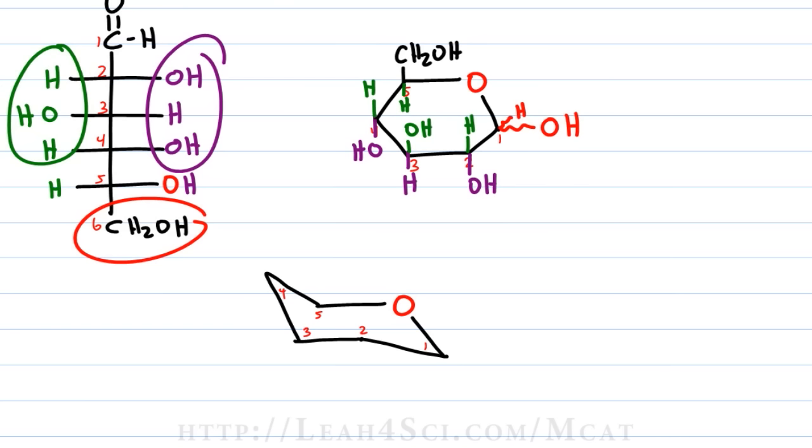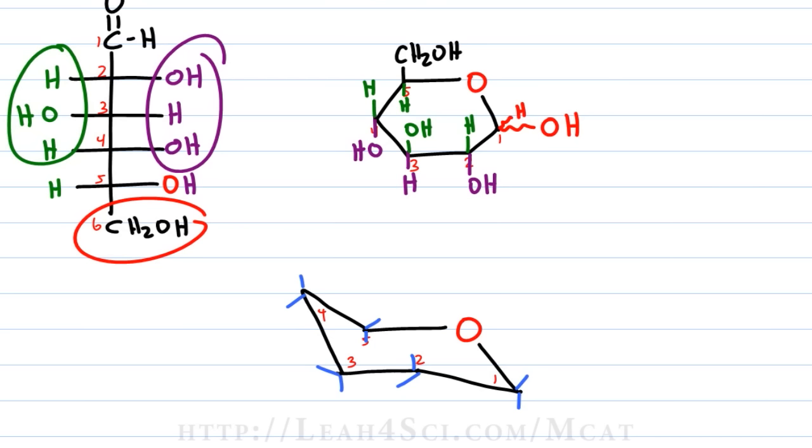And then just like with the Fischer to the Haworth, we're going to take the right side from two to four and drop it right down. But here you have to be careful because in a chair conformation you have your axial and equatorial substituents. So let's put the skeleton lines first so we know where we have axials up and down and where we have equatorials up and down. And again, this is covered in detail in my tutorial, the link's in the description.